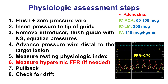Step six — not often performed these days — is to perform a hyperemic index, usually adenosine FFR. This is infrequent because resting indices work well for the vast majority of cases. However, if needed, it can be done with intravenous adenosine at 140 mcg/kg/min, or with intracoronary adenosine — typically 50 to 100 mcg for the right coronary versus 200 mcg for the left main.